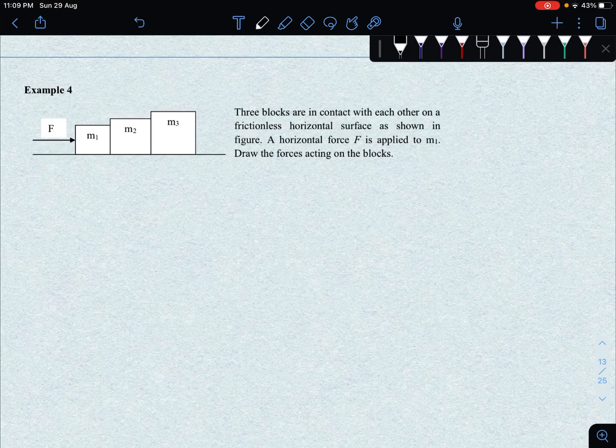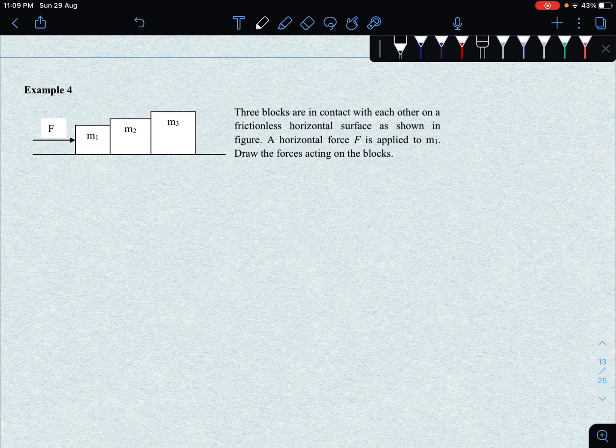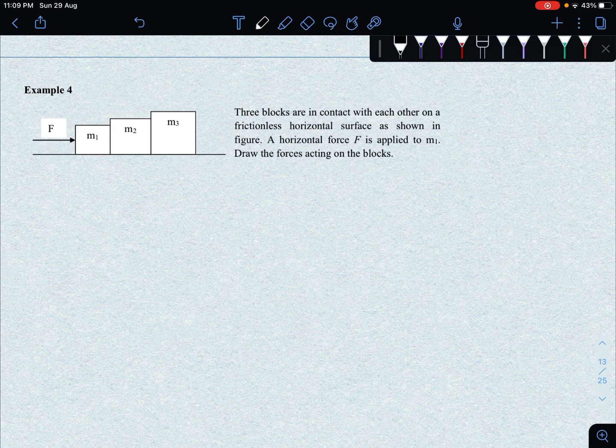Assalamualaikum and hi. So now we are going to look at example 4 from chapter 4 lecture note. What we have in this question is three blocks are in contact with each other on a frictionless horizontal surface.